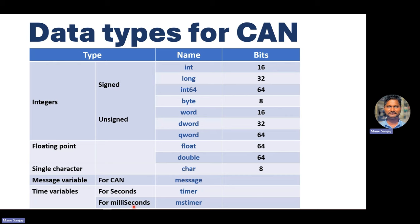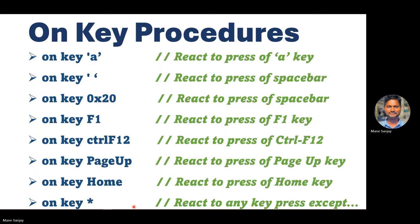Now let's look at key procedures — very commonly used is the 'on key' event. On key is an event handler: if you put a letter like A, B, or C in single quotes, as soon as you press that specific letter from the keyboard it executes that event. When you put double quotes and leave it blank, it responds to the space bar — and hexadecimal 0x20 also acts for the space bar.